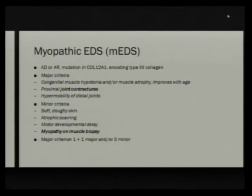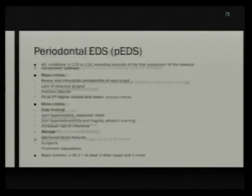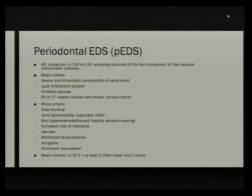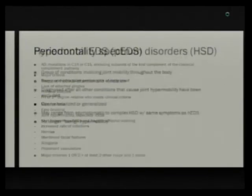Myopathic EDS involves muscle weakness that improves with age, fortunately. The periodontal type affects mostly the gingiva and teeth but also has acrogeria, prominent vasculature, and joint hypermobility.